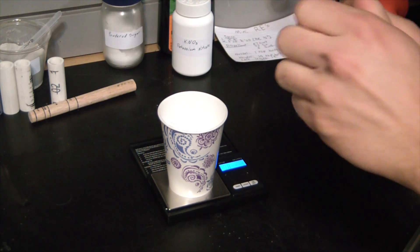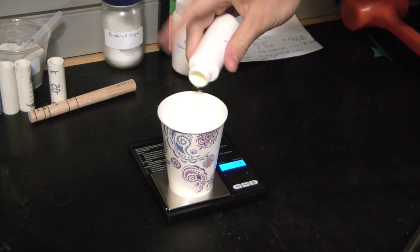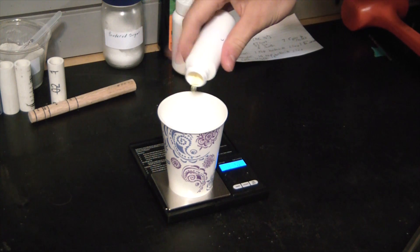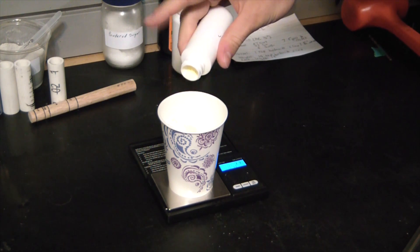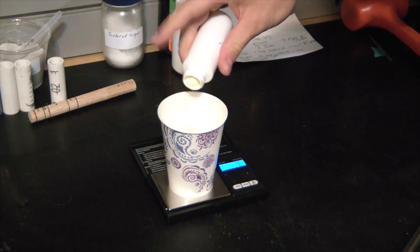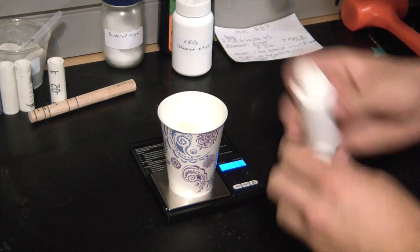And then 6 grams of sulfur. You'll notice my sulfur is a little clumpy, but it is very finely powdered, so it'll mix in just fine. There we go, 6 grams.